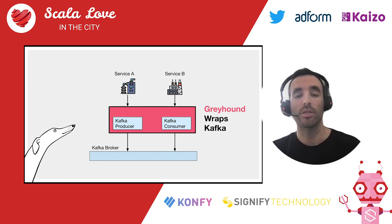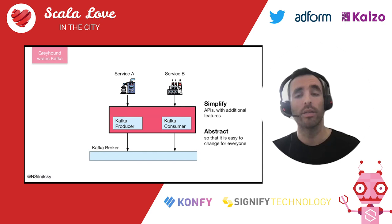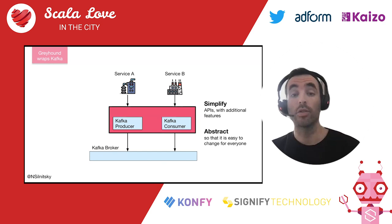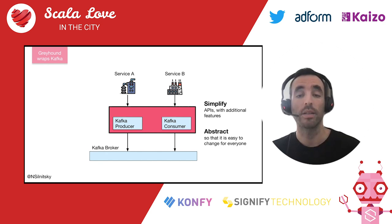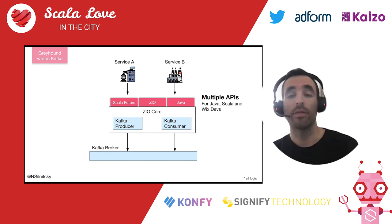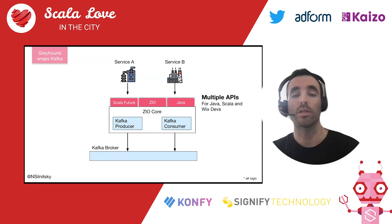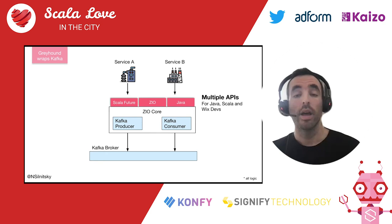Greyhound wraps the Kafka producer and Kafka consumer SDKs. The idea is to simplify the SDK APIs, remove boilerplate, and add additional features needed for Wix services. It's an abstraction layer that makes it easy to change things behind the scenes for all microservices — so we can fix bugs, introduce features, and have them almost immediately in production. For open source, we wanted maximum accessibility, so we support multiple APIs: a ZIO API, a Scala Future API, and a Java API.